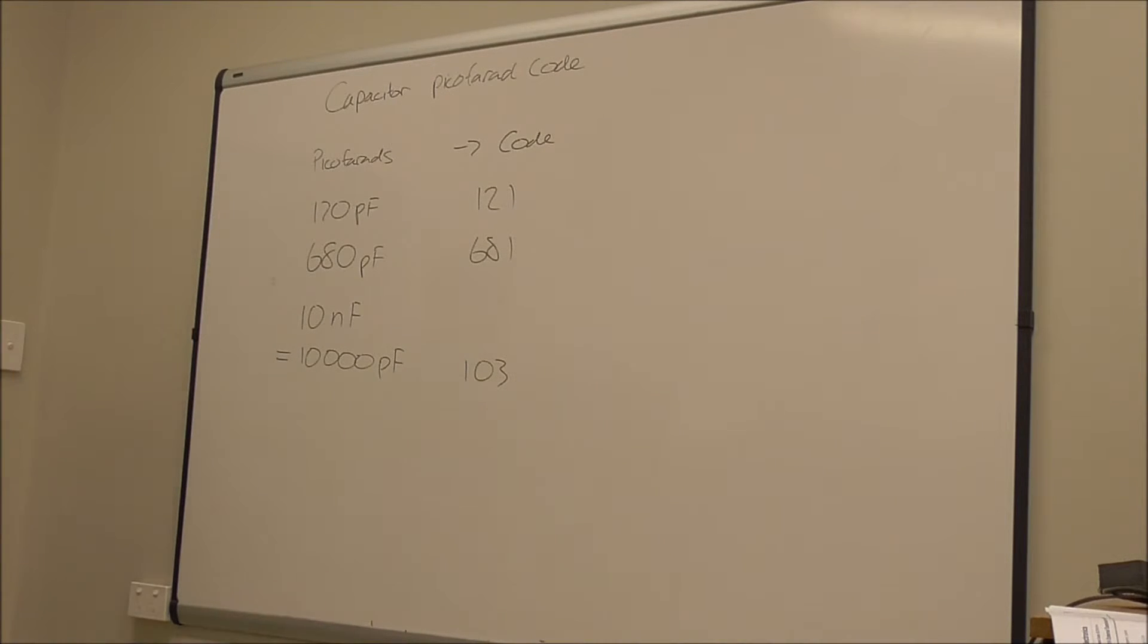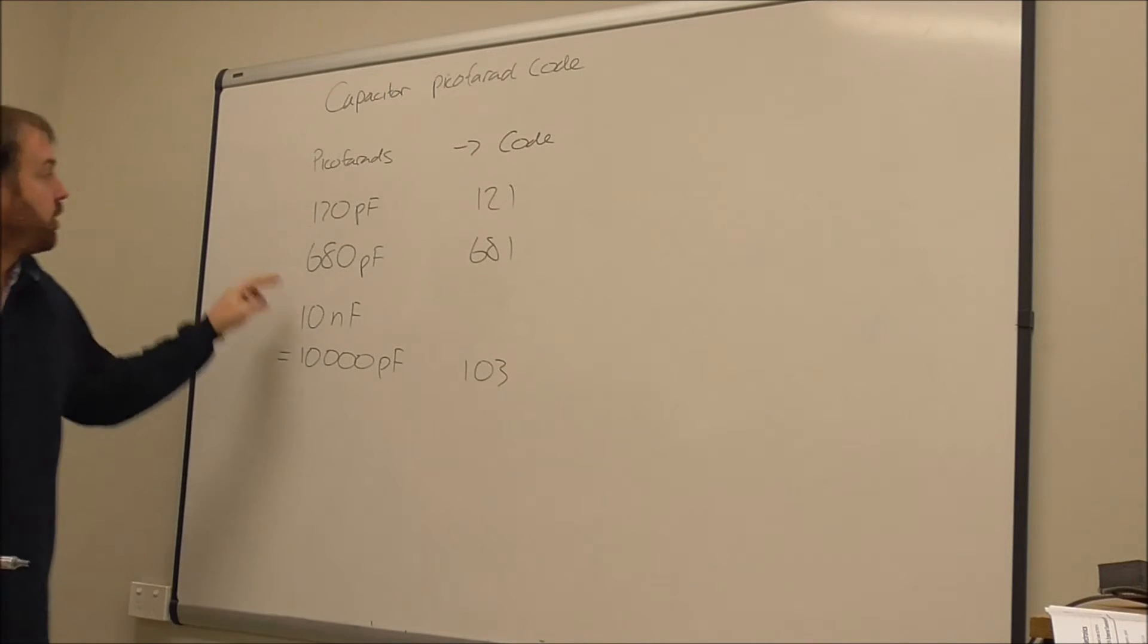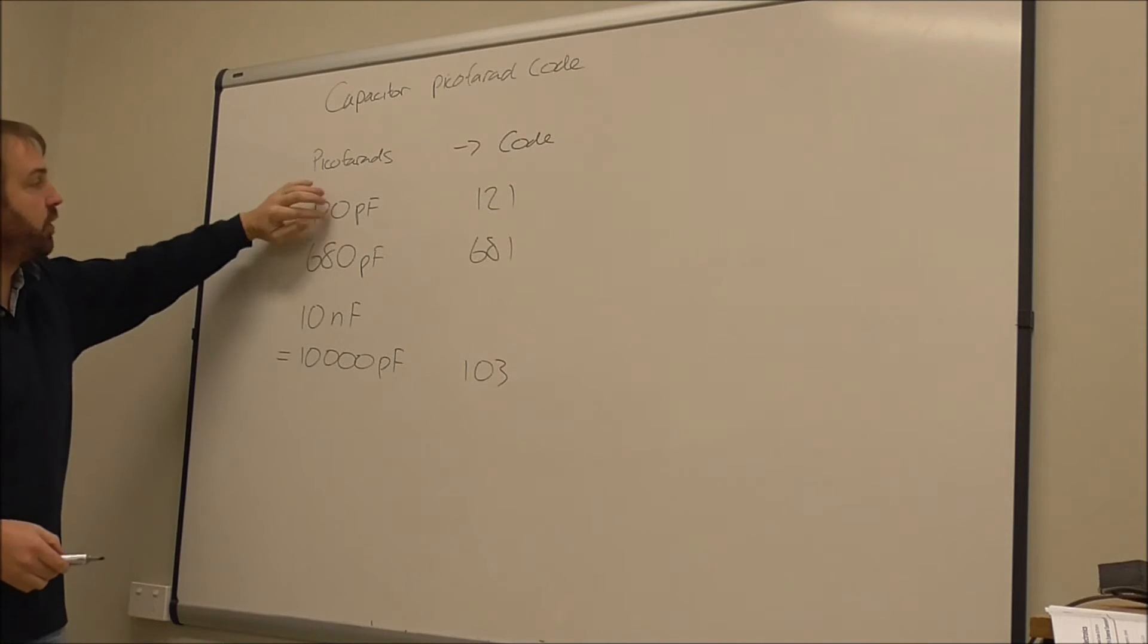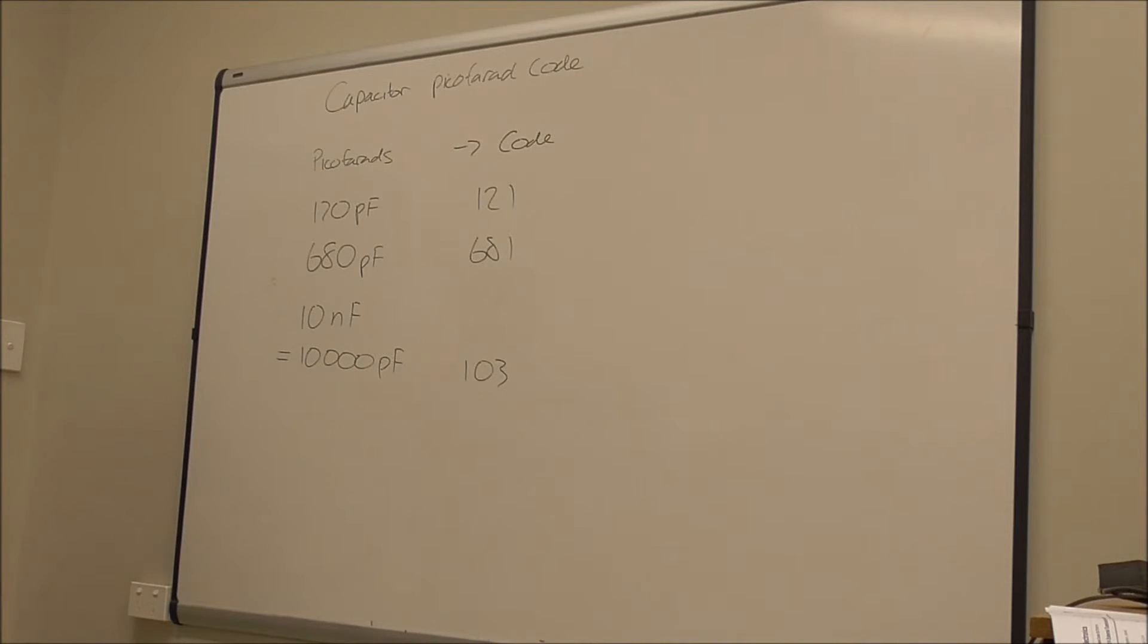So they all have the same two digits. The picofarad code is reasonably straightforward. All you need to do is convert the value of the capacitor into picofarads, and then look at the first two digits, that's the first two digits of your code.